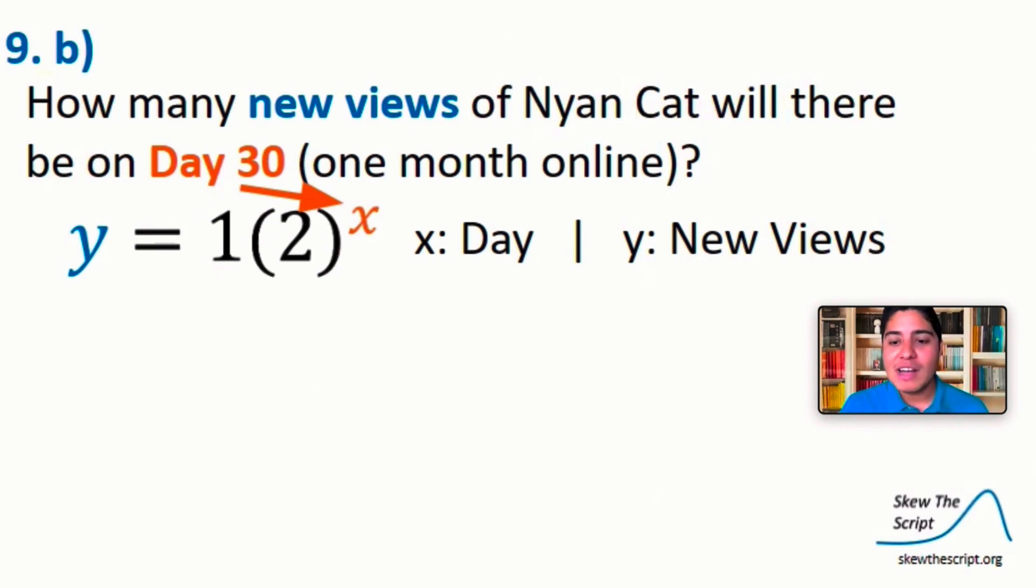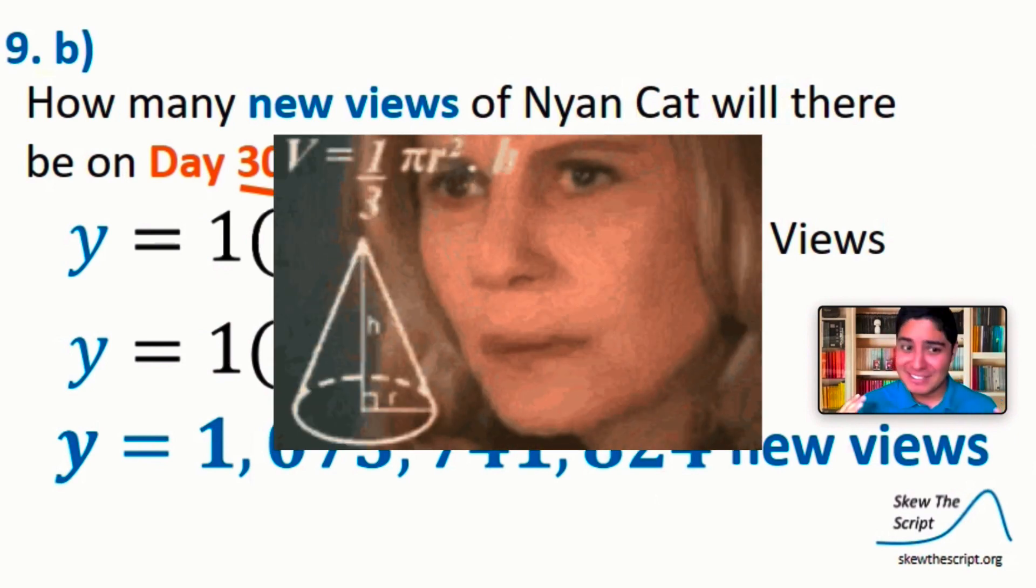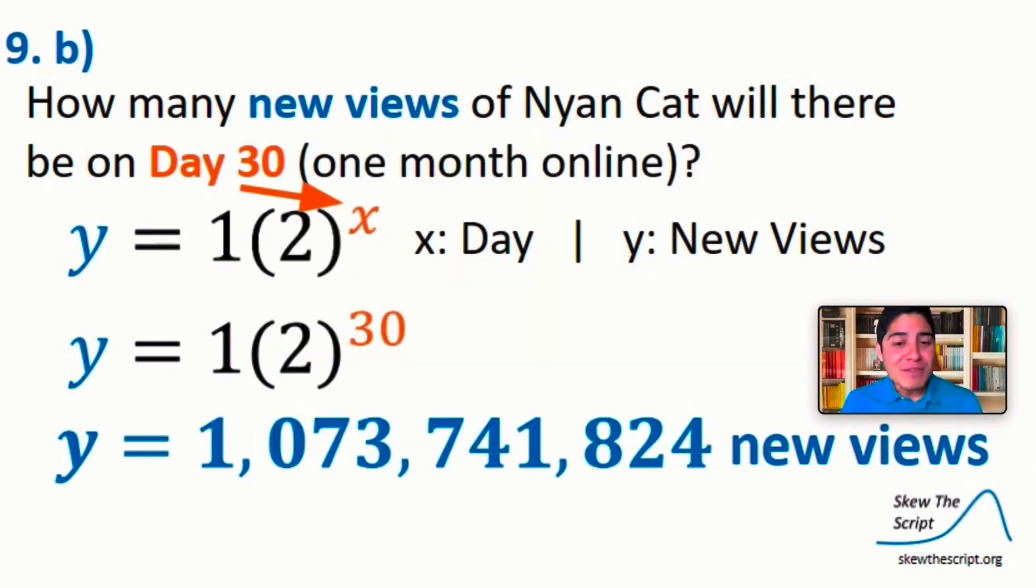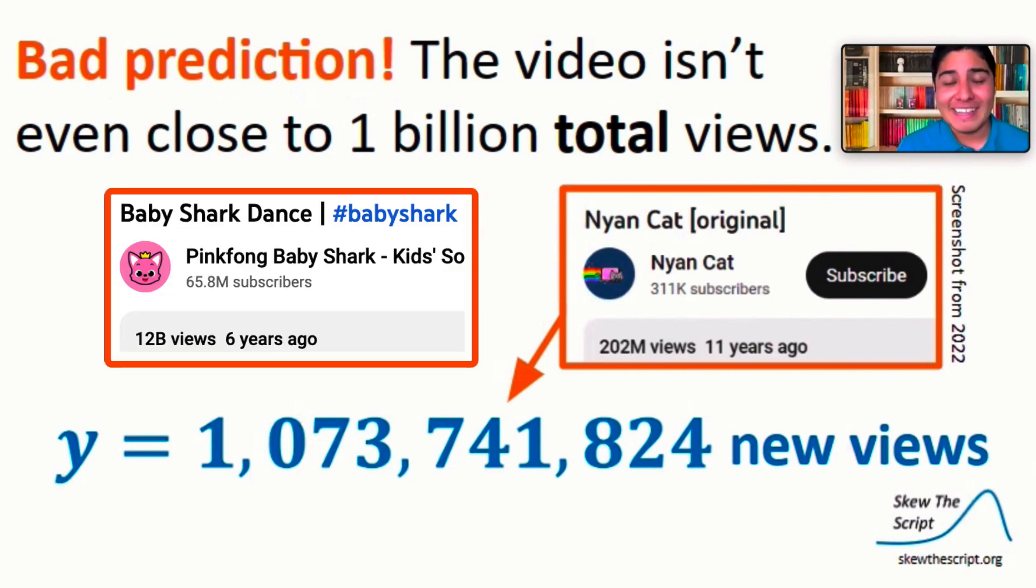Now why don't you pause the video and try 9b on your own. And we'll follow the same process, except now we're going to use 30 for x. We'll substitute in 30 and we see that two to the 30th power ends up being 1,073,741,824 new views. Is this right? My brain can't really process this number. But according to our model, there should be over 1 billion views by the end of the month. Do you think that this is a good prediction? Unfortunately, it's not. Nyan Cat is currently at 204 million views, so not even close to 1 billion, really. It went viral, but it's definitely no baby shark, and that's for sure.